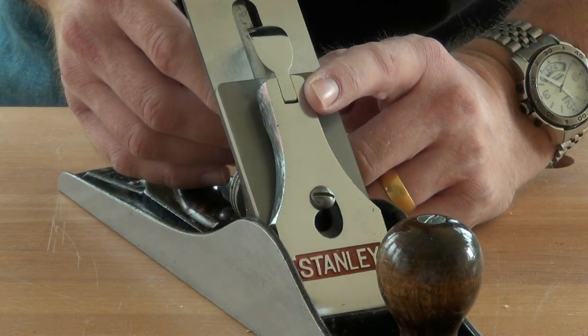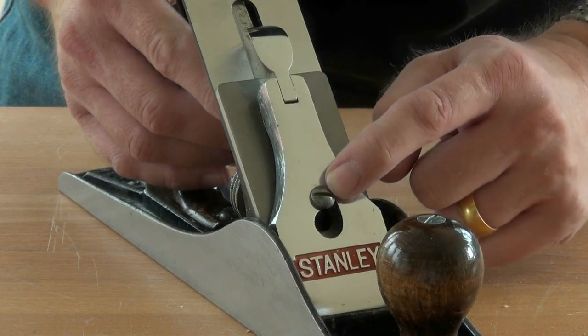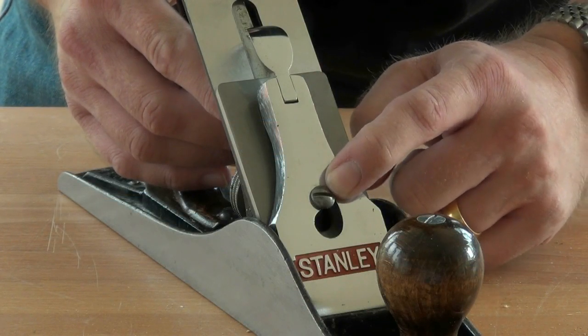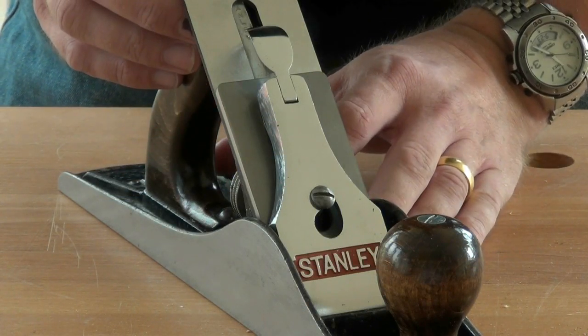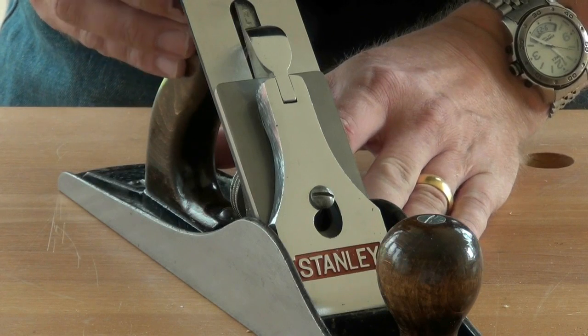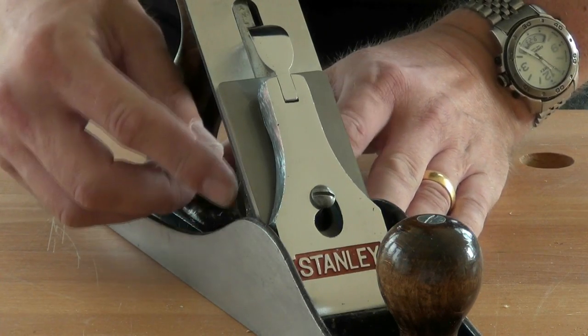The tension on the lever cap should be set using this screw into the frog to the point where we can still make lateral adjustments to the blade and we can still advance and retract the iron.